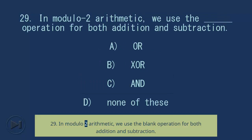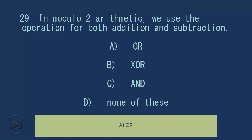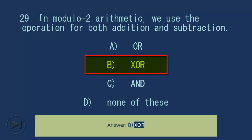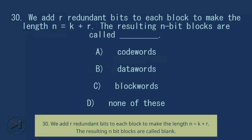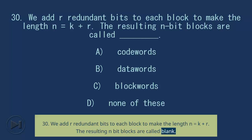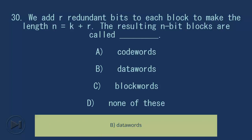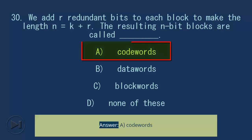Question 29: In modulo 2 arithmetic, we use the blank operation for both addition and subtraction. A) OR, B) XOR, C) AND, D) none of these. Answer: B, XOR. Question 30: We add redundant bits to each block to make the length n equals k plus r; the resulting n-bit blocks are called blank. A) code words, B) data words, C) block words. Answer: A, code words.